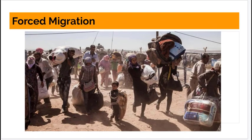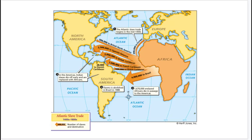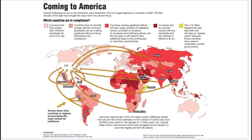Now we look at forced migration. Most famously in American history, we can discuss the Atlantic slave trade — from the 1400s to roughly the 1800s — in which Africans were captured, sold into slavery, and transported across the Atlantic to be sold into plantations in North America, Central America, and South America. We can also look at the forced migration of Native Americans — the Trail of Tears — when they were forcibly removed so American settlers could claim the land.